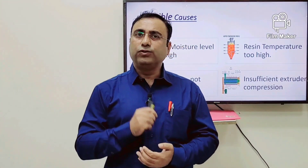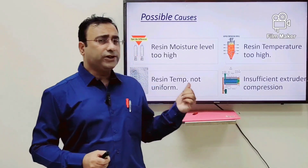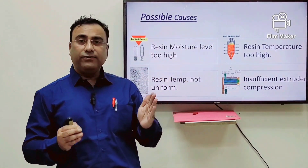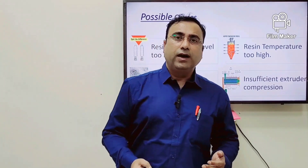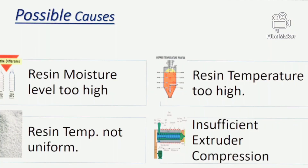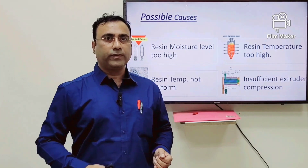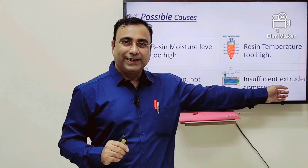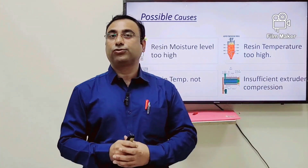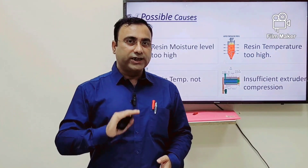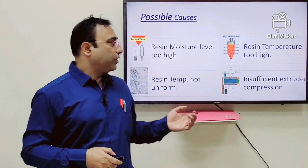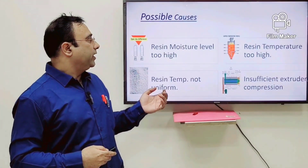There are four major reasons that contribute to producing hazy preforms. The first is heavy moisture in the PET resin. The second is resin temperature too high. The third is uneven temperature of the PET resin. The fourth and last is insufficient extruder compression.